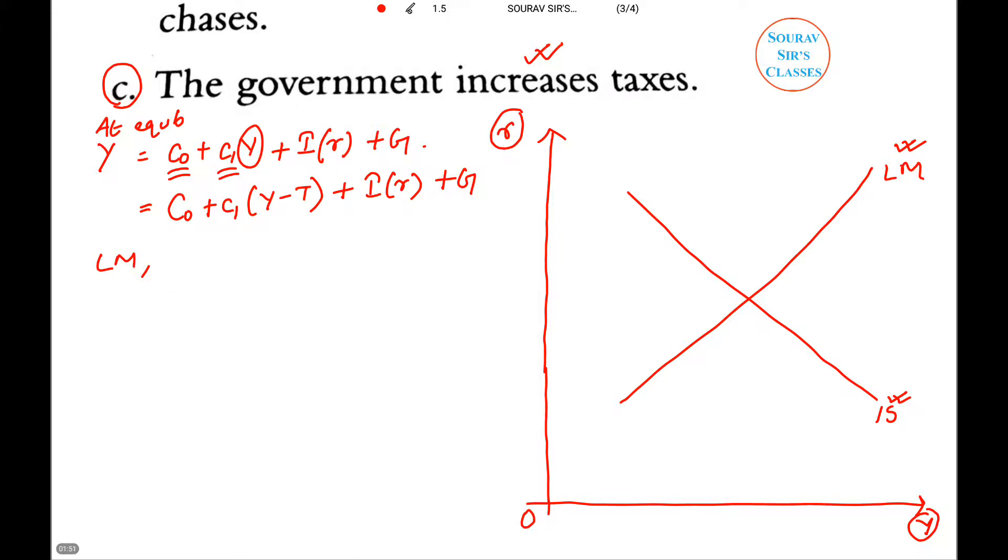For LM, the real money balances demanded is a function of interest rate and income. At equilibrium, the demand for real money balances should be equated to the supply of real money balances.